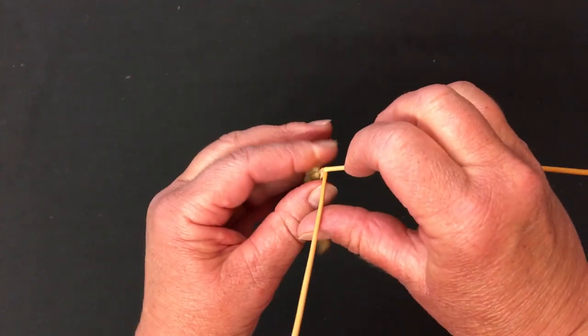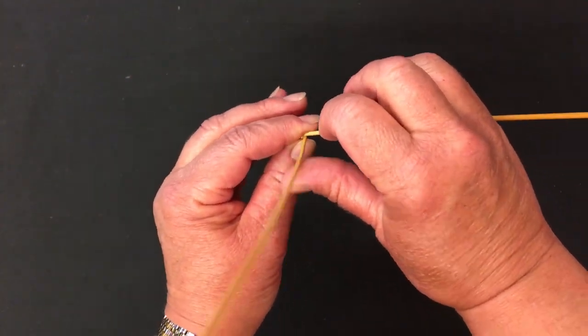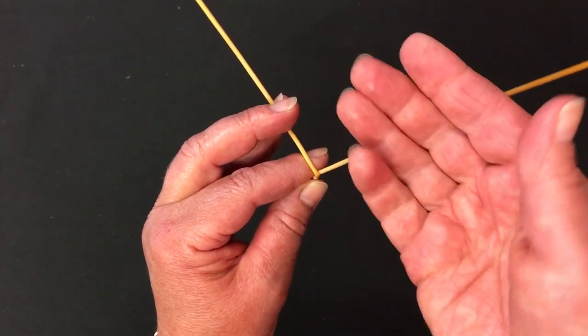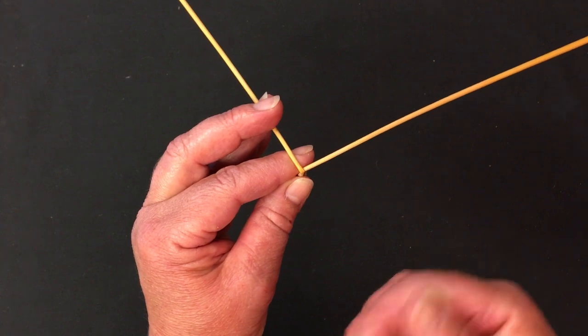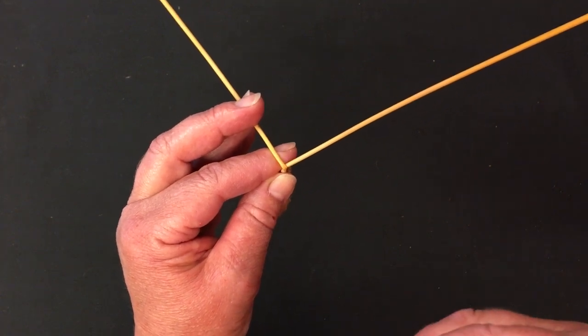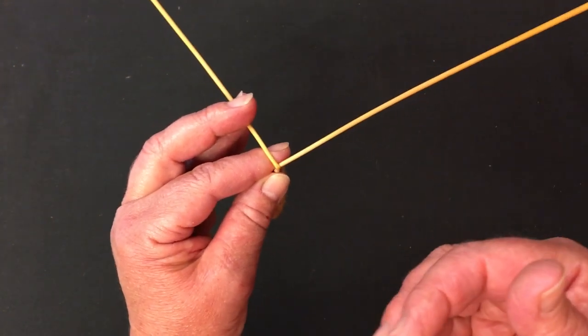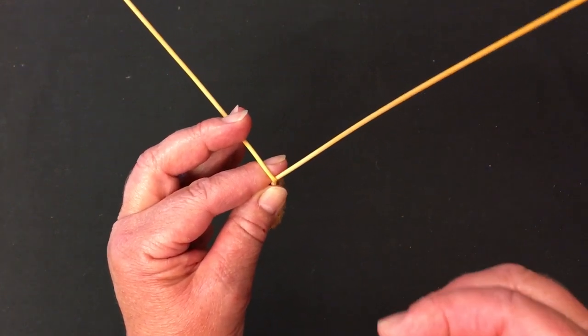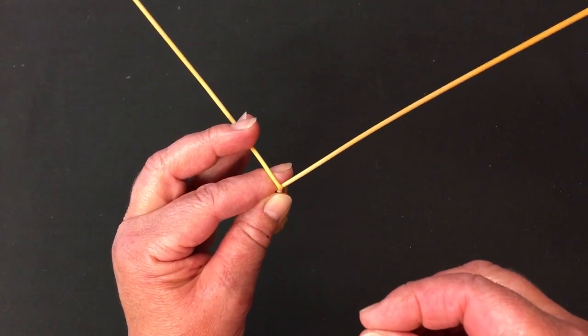I like to start with a six o'clock straw and push it away from me. I feel I've got far more control doing it that way than bringing it towards me, but there's just as many people who work in that method. So it's up to you to find the way of holding the straw that's comfortable for you.